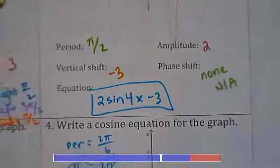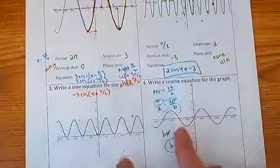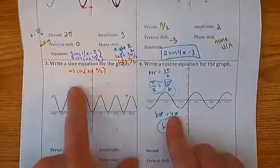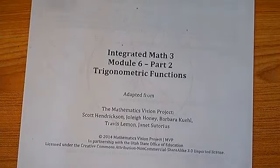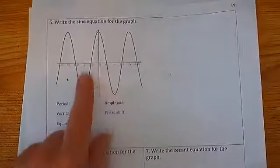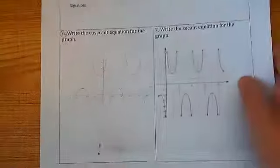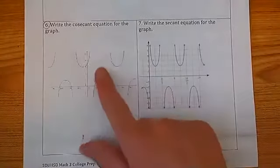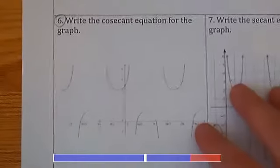That's one sine and one cosine done together. For homework, do numbers 3 and 4 — one sine, one cosine. For classwork, let's continue. You also have one cosecant and one secant. Let's do the cosecant together, and number 7 will be homework.